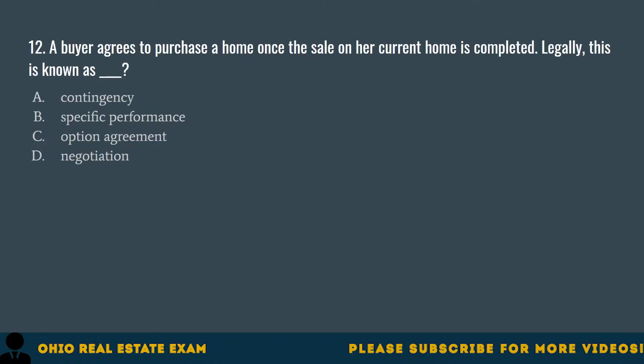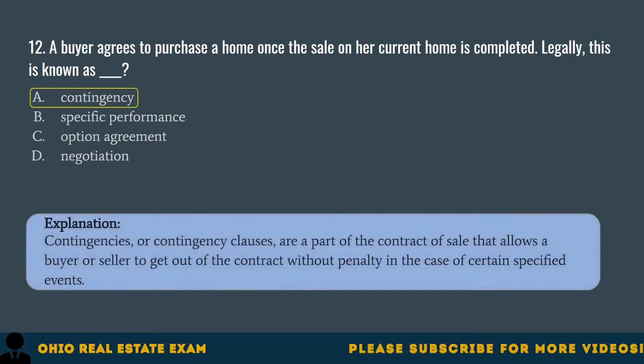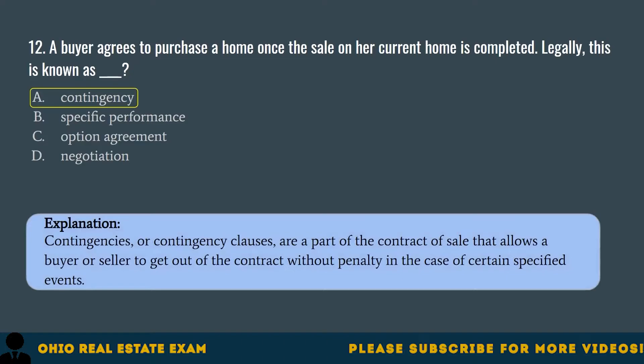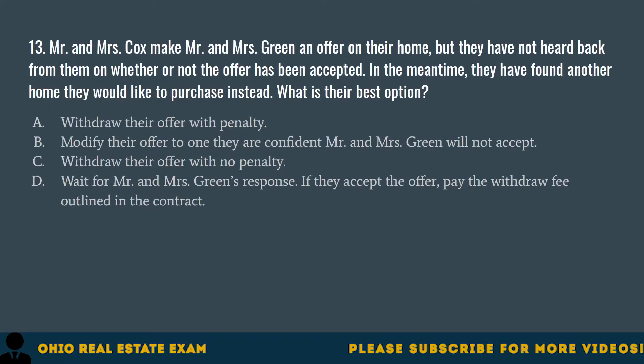Question 12. A buyer agrees to purchase a home once the sale on her current home is completed. Legally, this is known as... A. Contingency. B. Specific performance. C. Option agreement. D. Negotiation. The correct answer is A. Contingency. Contingencies or contingency clauses are a part of the contract of sale that allows a buyer or seller to get out of the contract without penalty in the case of certain specified events.